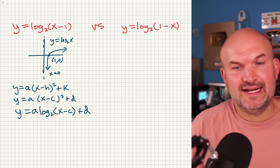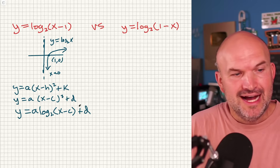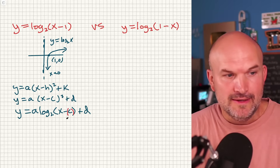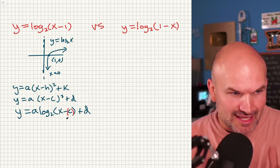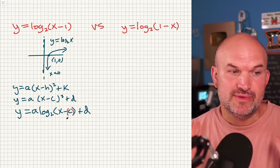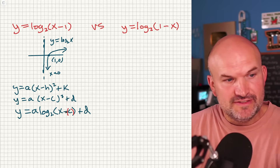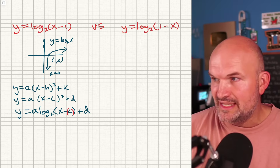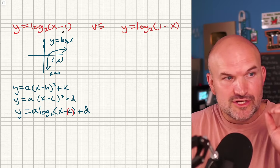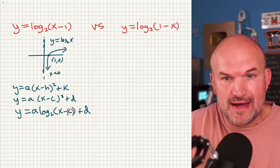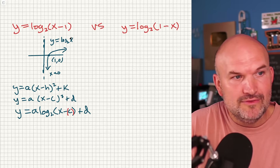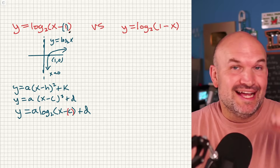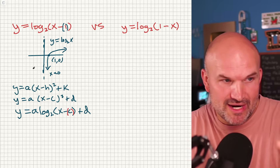One thing I think is important — whenever I'm teaching logarithms, I always like to add an extra set of parentheses around the c. What that does is tell me what my horizontal transformation is going to be. Remember, x minus c shifts the graph to the right, and a positive c means a rightward shift. So here with x minus 1, putting parentheses around that 1 tells me c has a value of 1, shifting the graph one unit to the right.